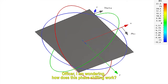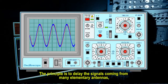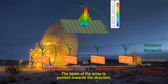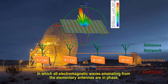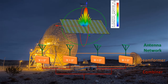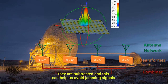Officer, I'm wondering — how does the phase shifting work? The principle is to delay the signals coming from many elementary antennas constituting the array relative to one another. The beam of the array is pointed towards the direction in which all electromagnetic waves emanating from the elementary antennas are in phase, such that they are added. If those electromagnetic waves are out of phase, they are subtracted, and this can help us avoid jamming signals.